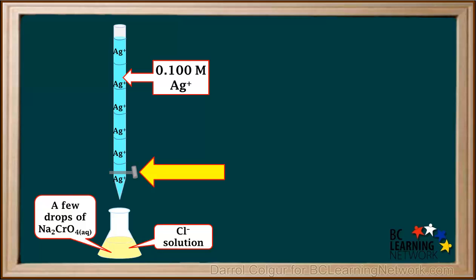In a titration, we briefly open the stopcock. The solution in the burette drips into the flask, bringing Ag+ ions with it.